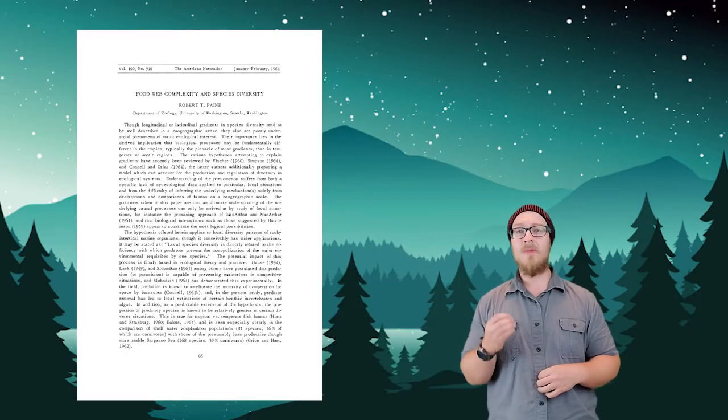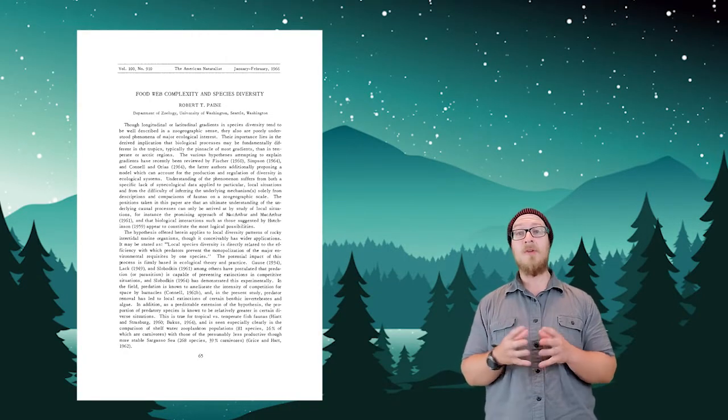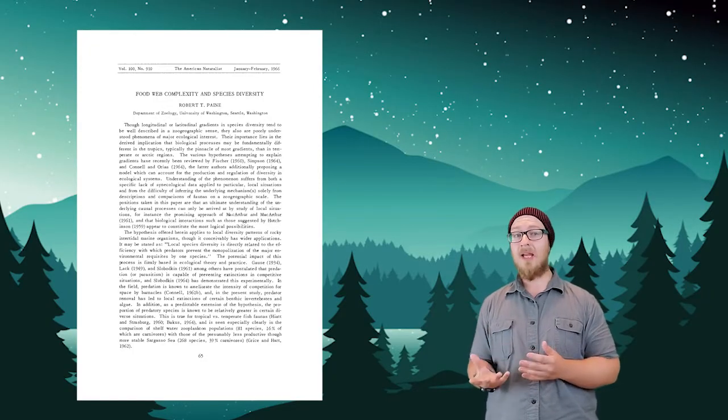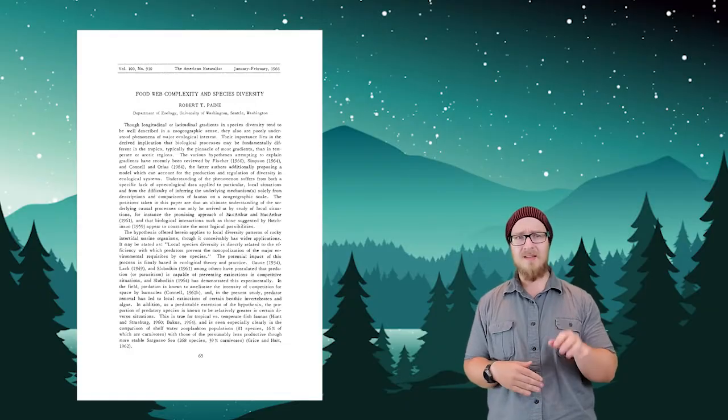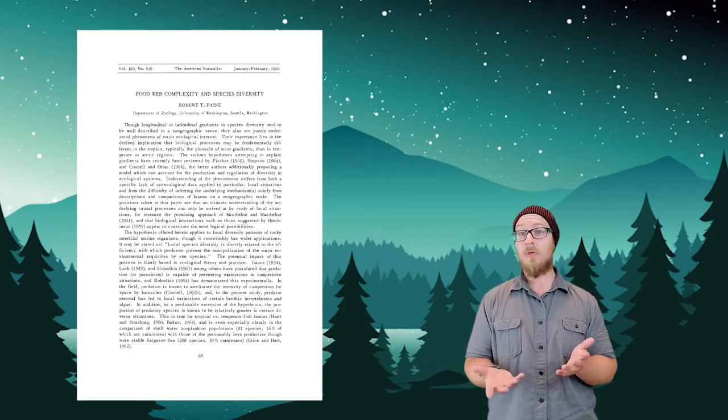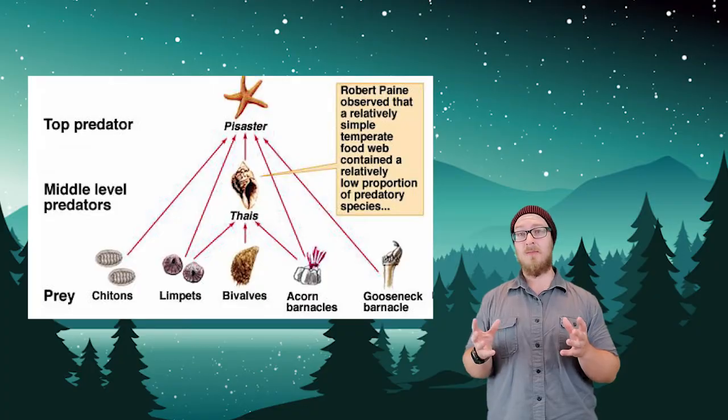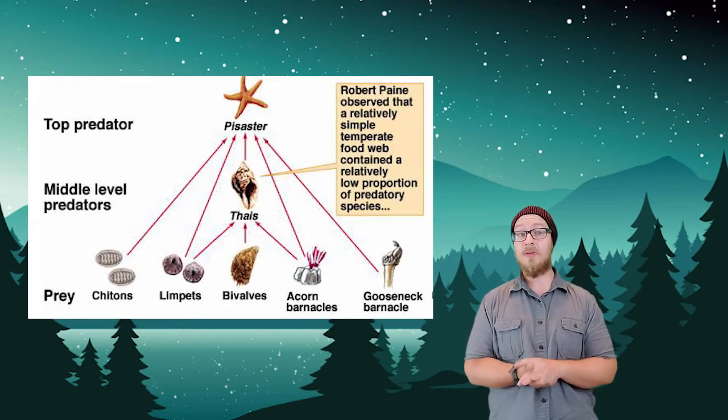In one of the most impactful papers ever published in the field of ecology, famed zoologist Robert Payne wondered what would happen if he removes a top predator from a shoreline ecosystem. He removed pisaster, a type of sea star. What he observed was a paradigm shift in ecological thought.